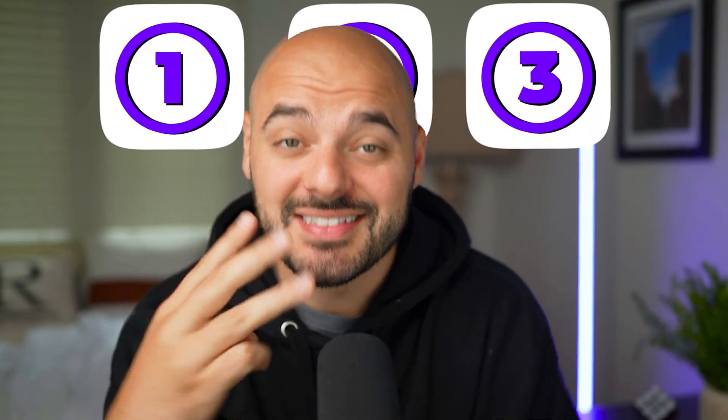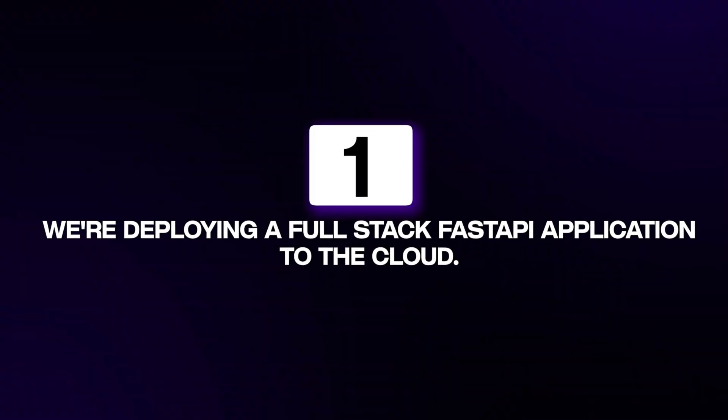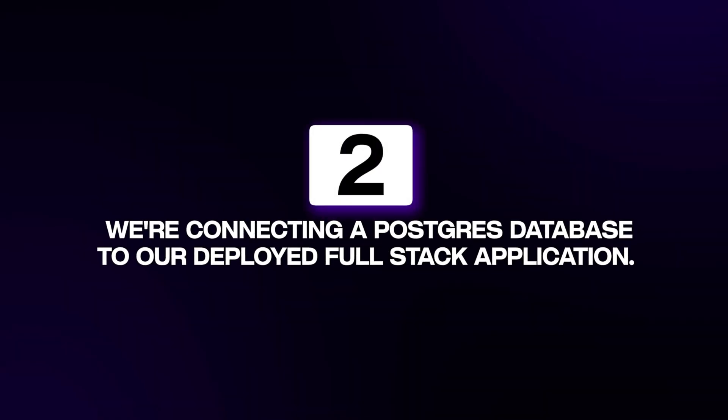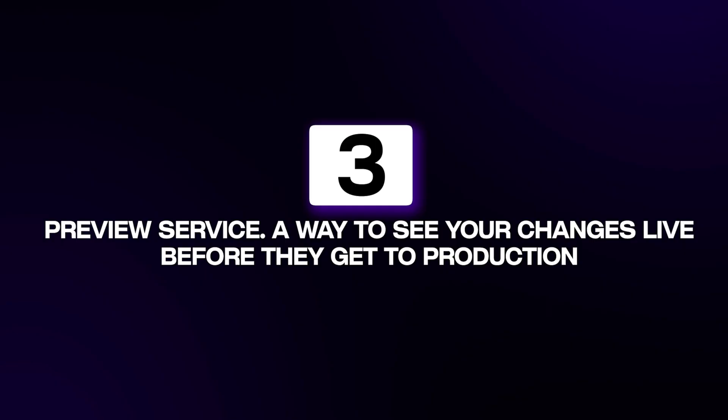Today we're going to be going over three things. First, we're deploying a full stack FastAPI application to the cloud, and I'll show you the exact steps on how to do that. Next, we're connecting a Postgres database to our deployed full stack application — this is something that most tutorials skip entirely. And third, we're going to go over something called preview service, which means every time you make a pull request, Render will create a separate instance of your application so you can see the changes before merging anything into main. This is a game changer that developers love.